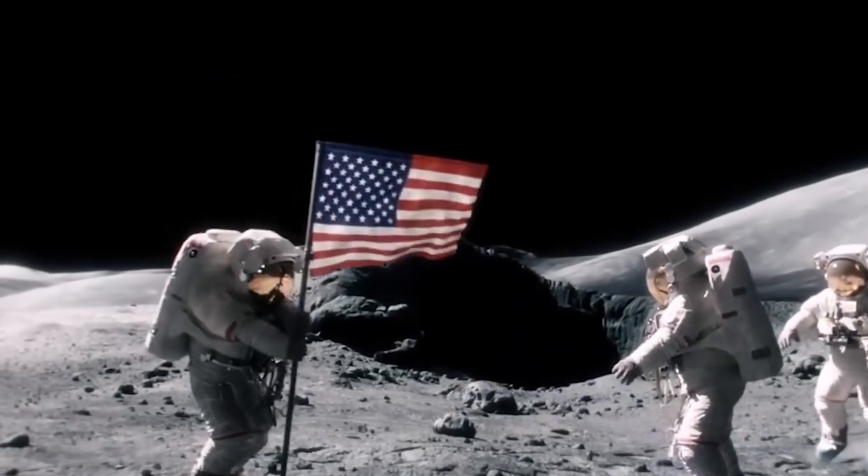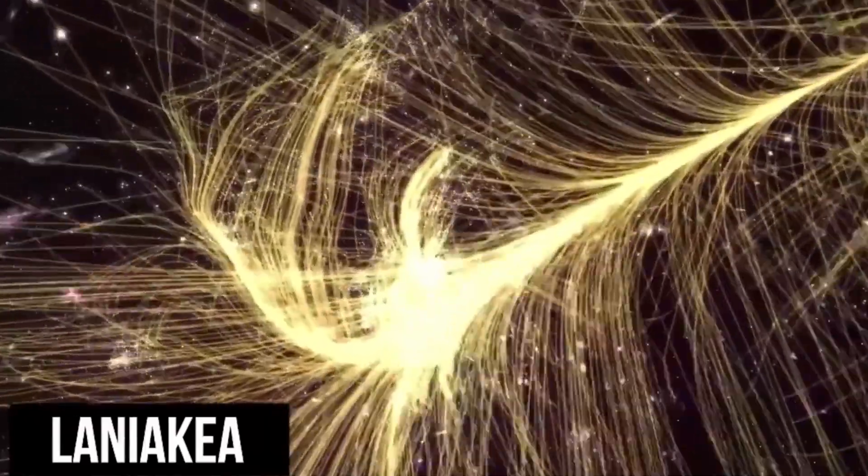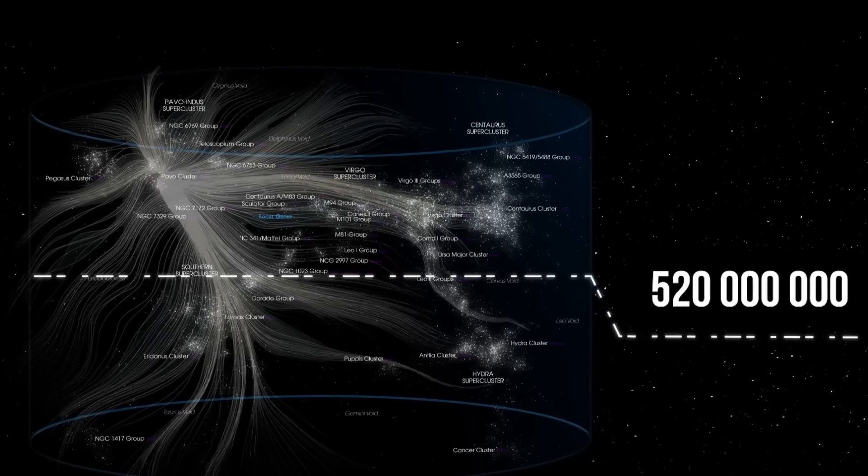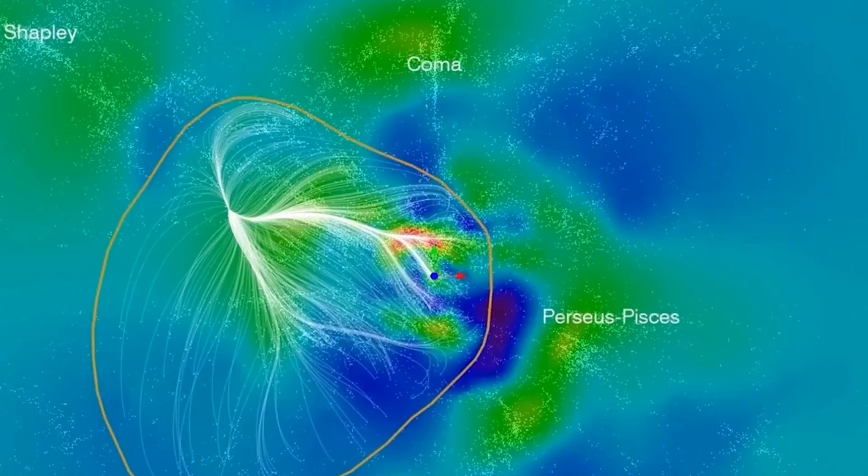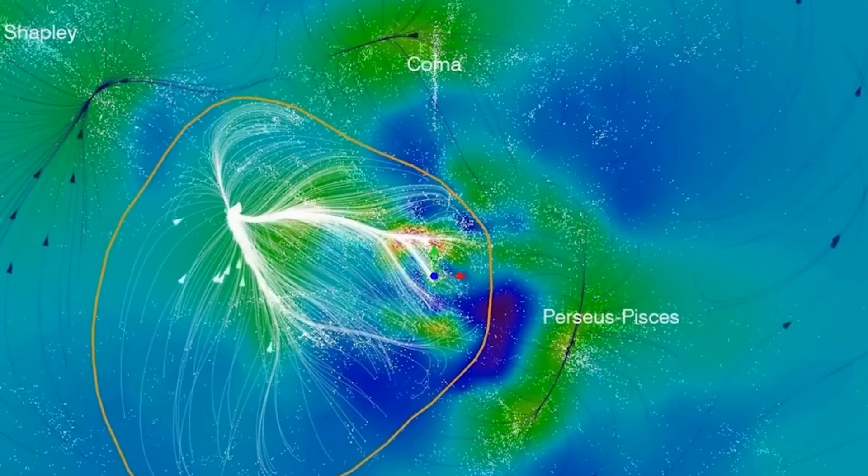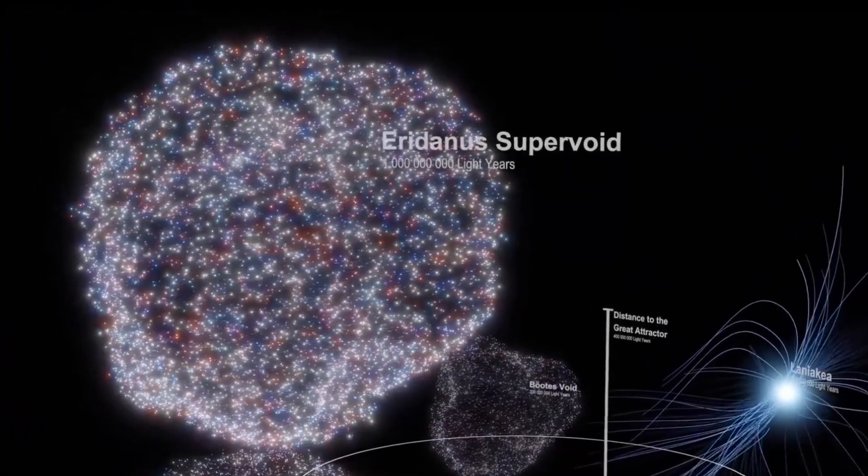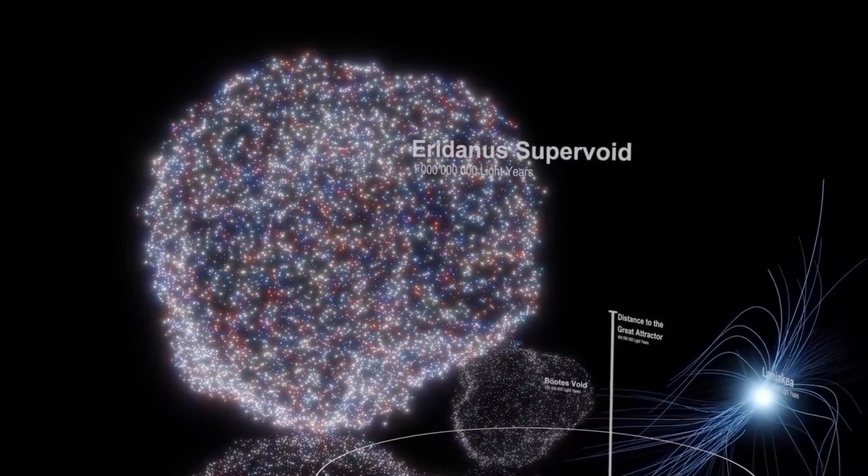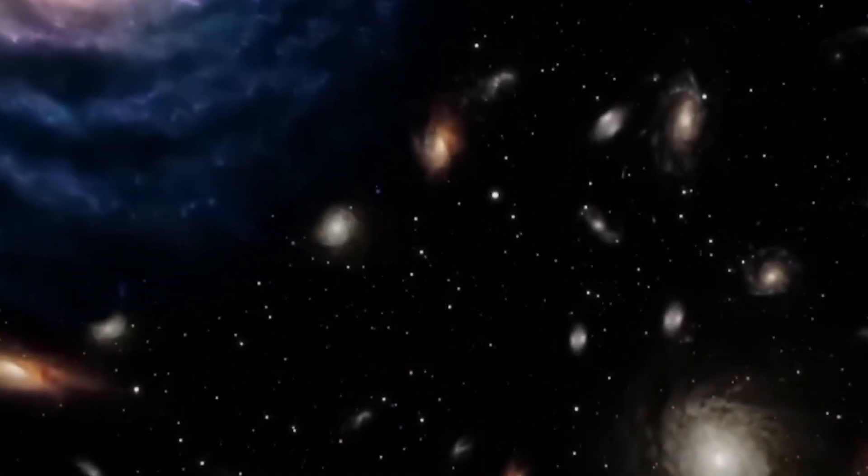Even our galaxy is part of a larger cosmic neighborhood called the Laniakea Supercluster, an enormous collection of galaxies stretching over 520 million light years. This supercluster houses thousands of galaxies, all gravitationally bound to each other in a vast cosmic structure. The Laniakea Supercluster is nearly 5,000 times larger than our Milky Way and represents one of the largest coherent structures in the universe.